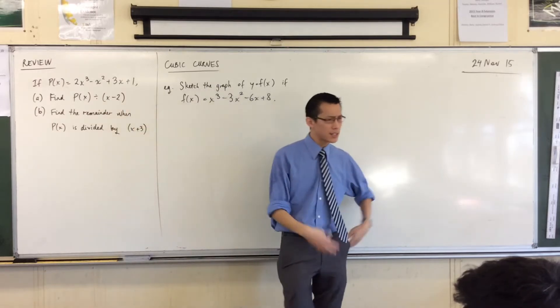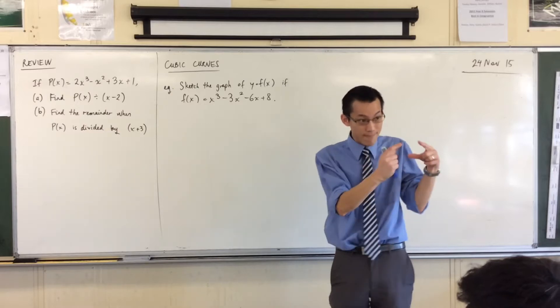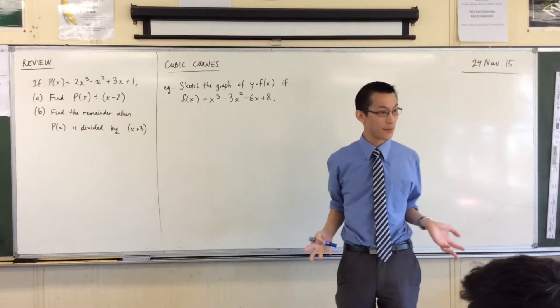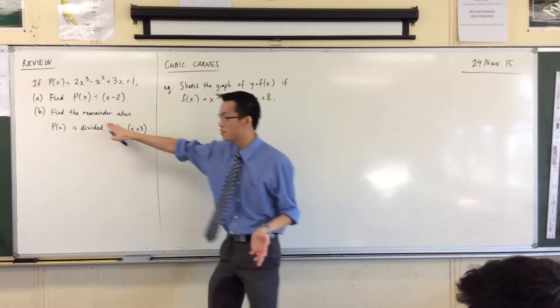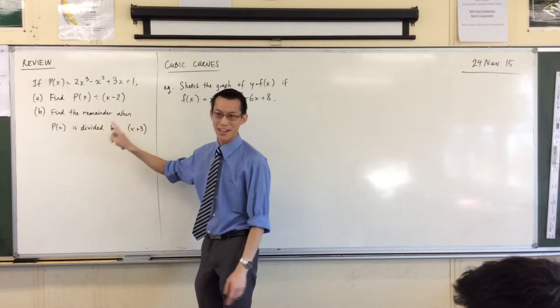And then here, because it just says find the remainder, I could go through the whole division process and then I will pop a remainder at the end. But there's a faster way, isn't there? If all I'm after is just the remainder, I'm gonna use the remainder theorem. If you can't remember that, we'll get to it in a second.